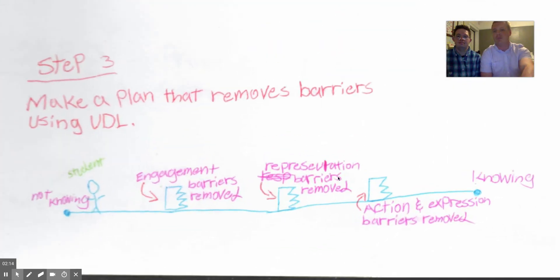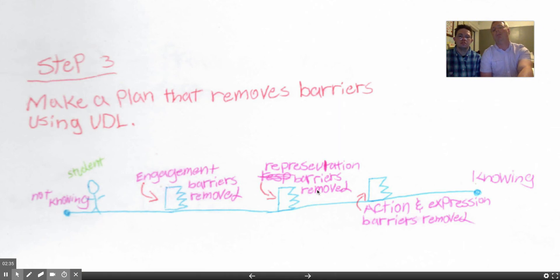Next step. What's that one? We're making a plan that will remove barriers using UDL. Okay, and so tell me about this picture. Here's the student and they're at, what does that say? Not knowing. And then what's over here? The last one is knowing. And so what are we trying to remove for kids?